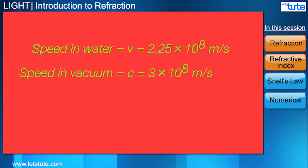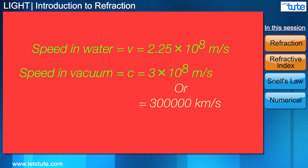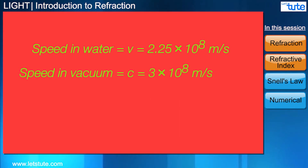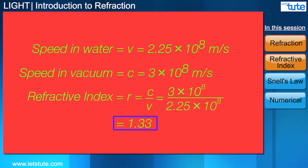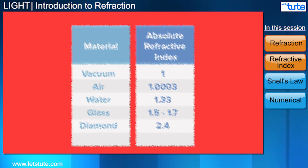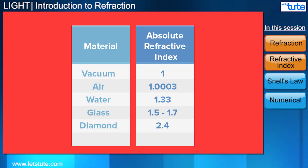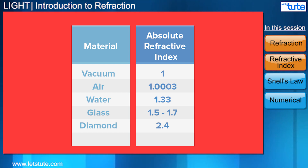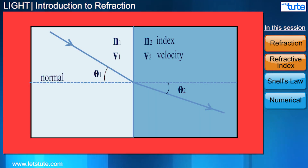Thus the refractive index of water with respect to vacuum is 1.33. Here are some materials and their refractive indices with respect to vacuum. Now that we know this, we can look properly at refraction and the laws of refraction.